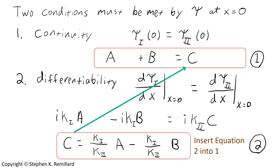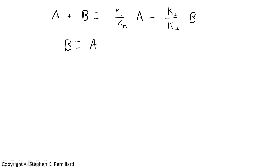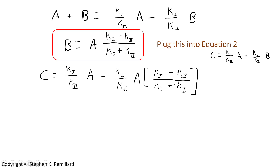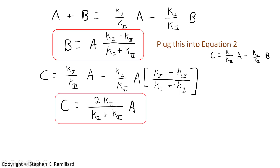Inserting the expression for c from equation two into equation one gives a new expression containing only a and b. Rearranging and solving gives an expression for b in terms of a. Substituting that back into equation two gives an expression for c in terms of a. So we have b and c both expressed in terms of a. You will never actually know all three coefficients without some initial condition, but there are many questions we can answer without it.